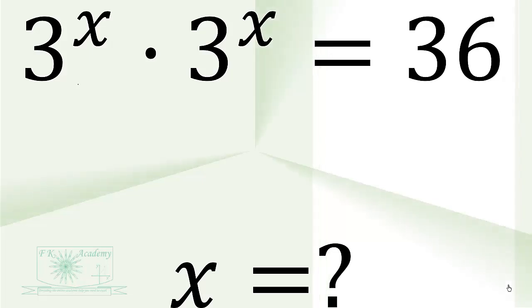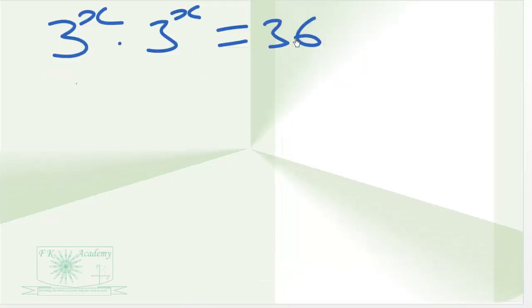We have this exponential equation 3 power x times 3 power x is equal to 36 to solve. When we have n times n, it is the same as n exponent 2. So when we have 3 power x times 3 power x, it is the same as 3 power x squared.